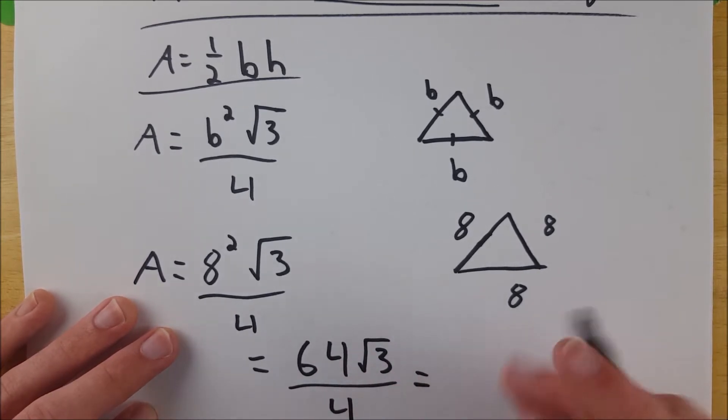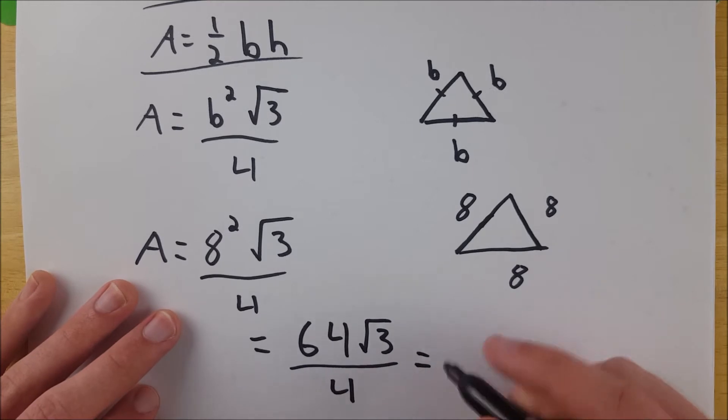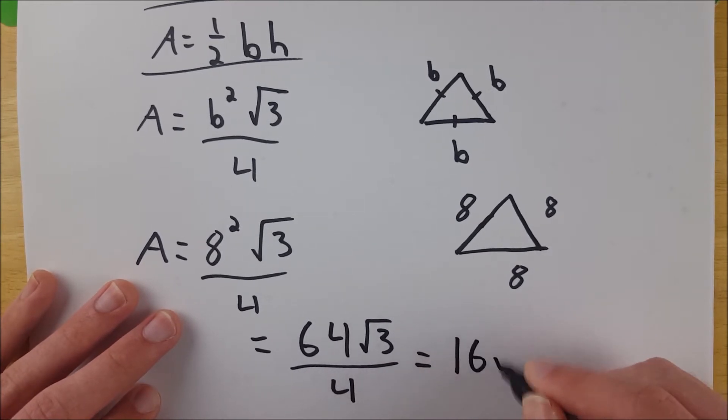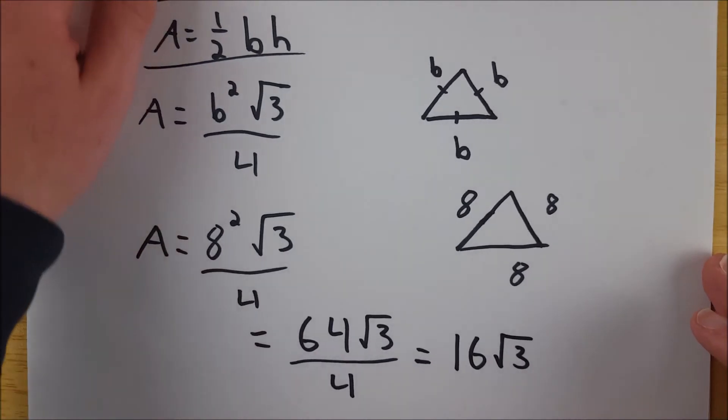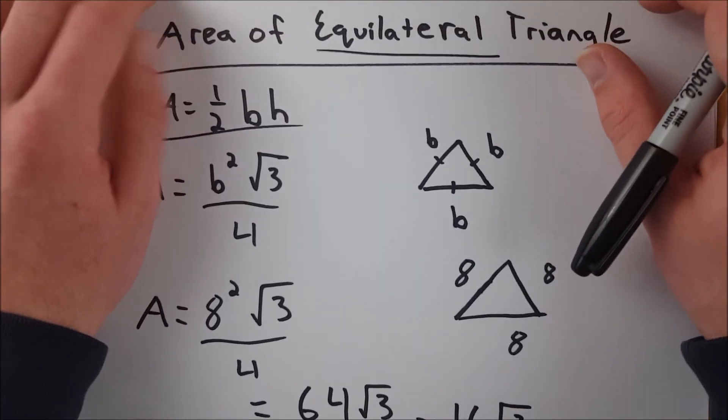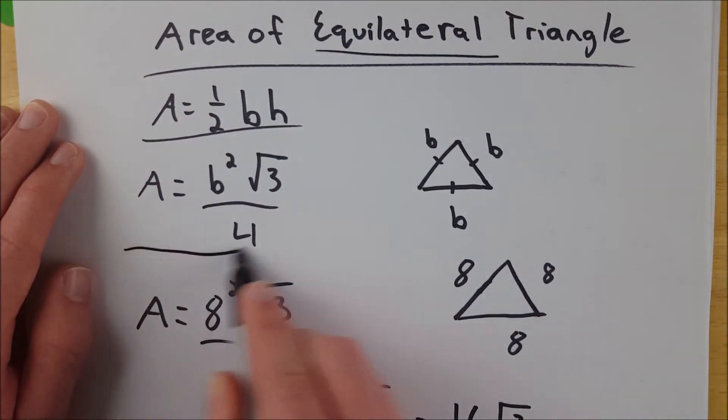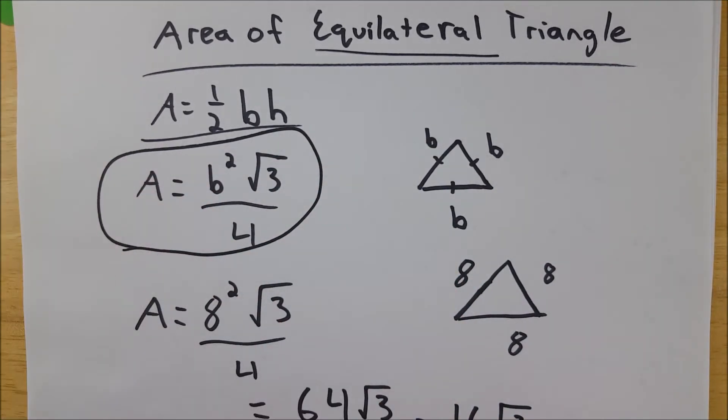64 divided by four is 16, so we're left with 16 multiplied by the square root of three. That's how you can find the area of an equilateral triangle using this formula.